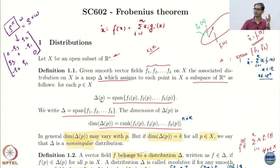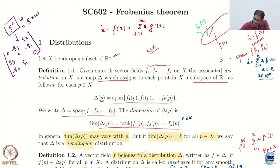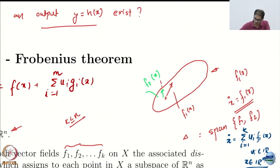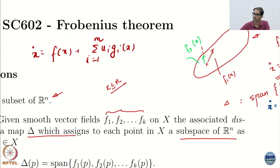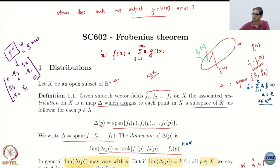Every point in the state space gives you a direction. You take a point — F1 gives you this direction, F2 gives this direction. What is the distribution? Distribution is just the span of these — it is the vector space formed by them.